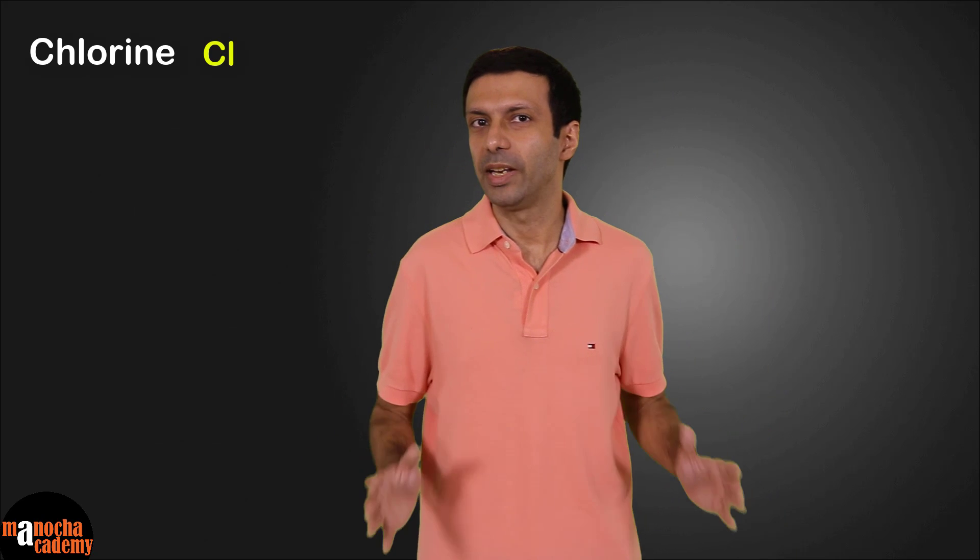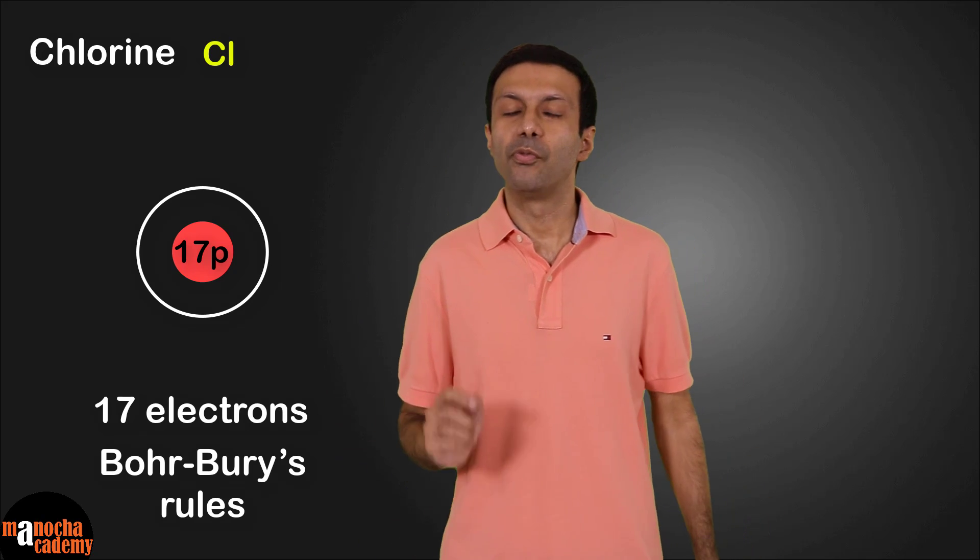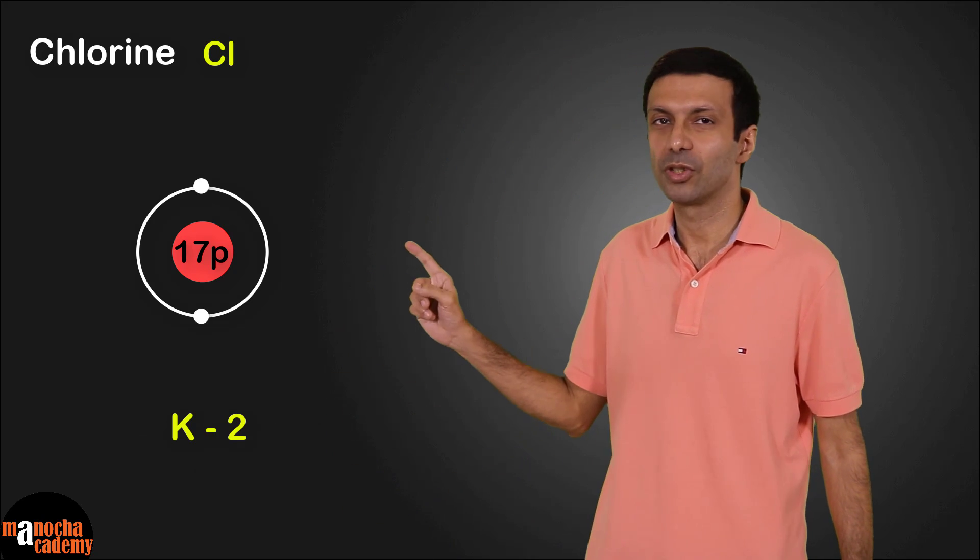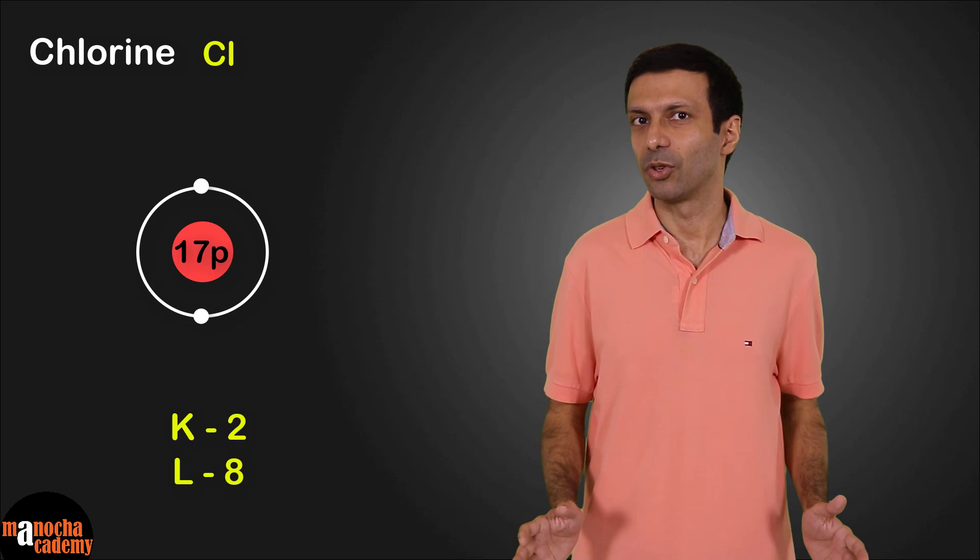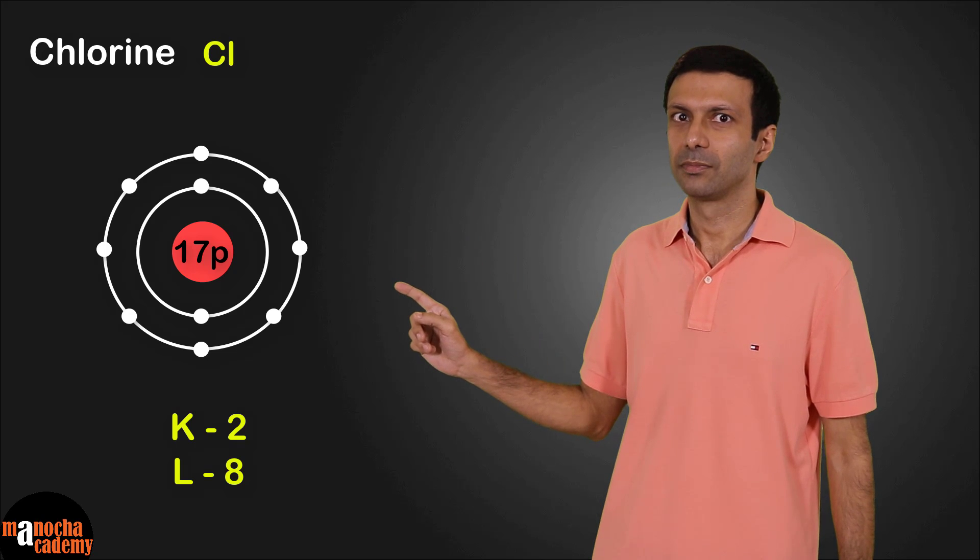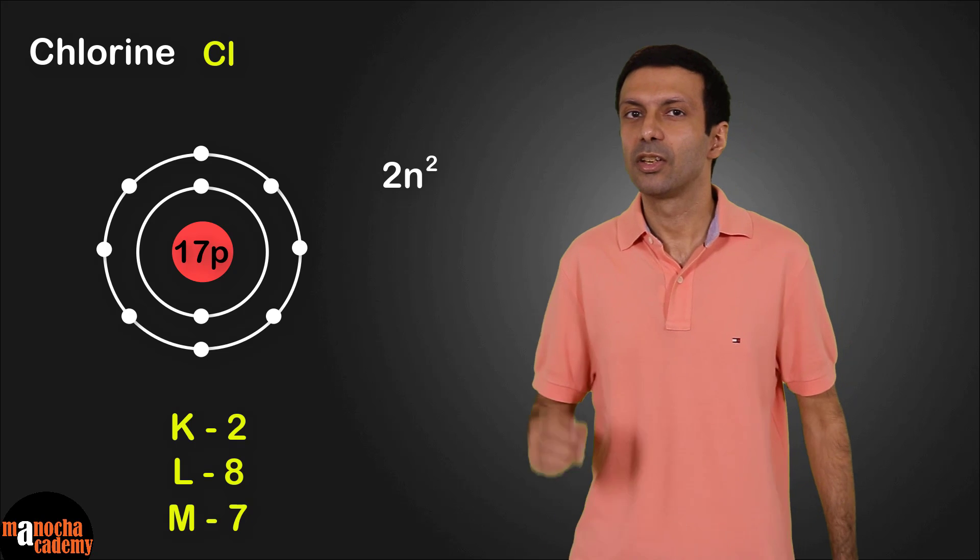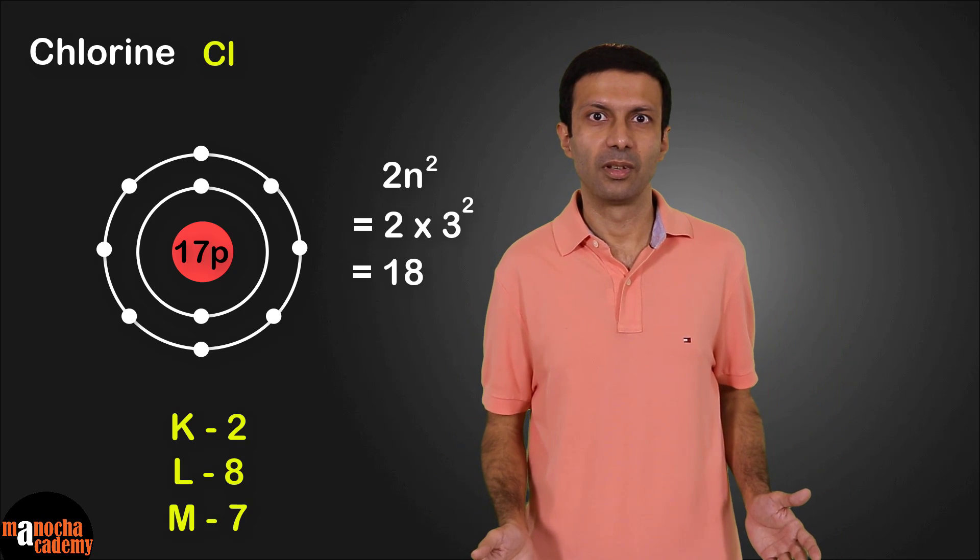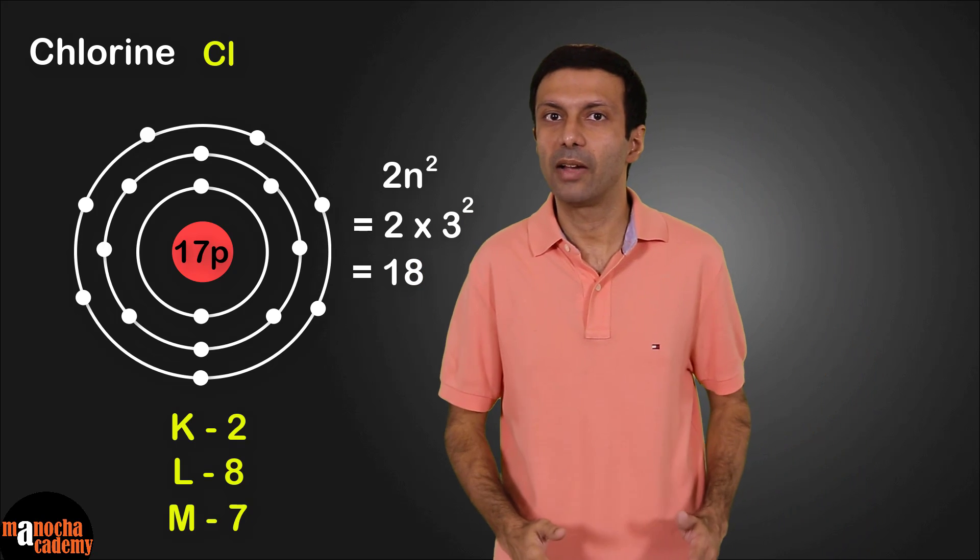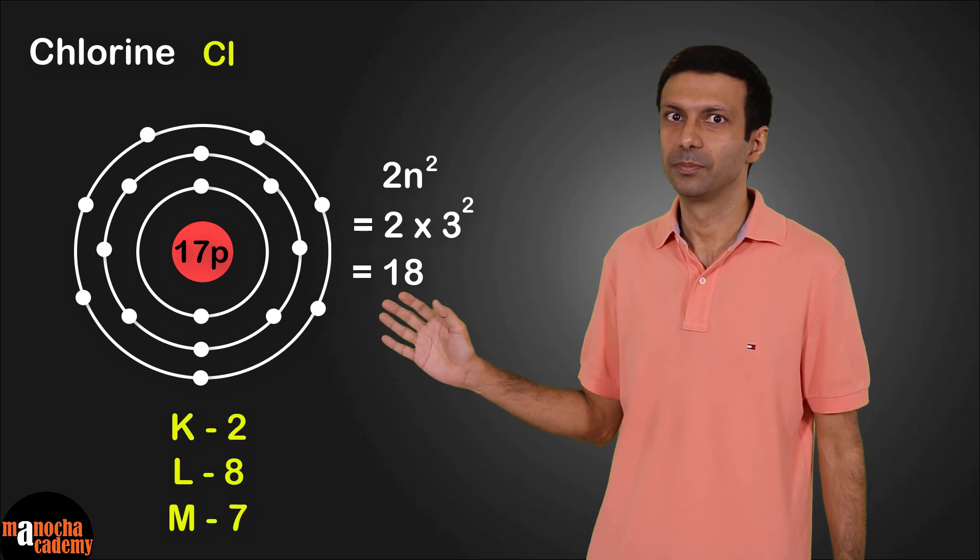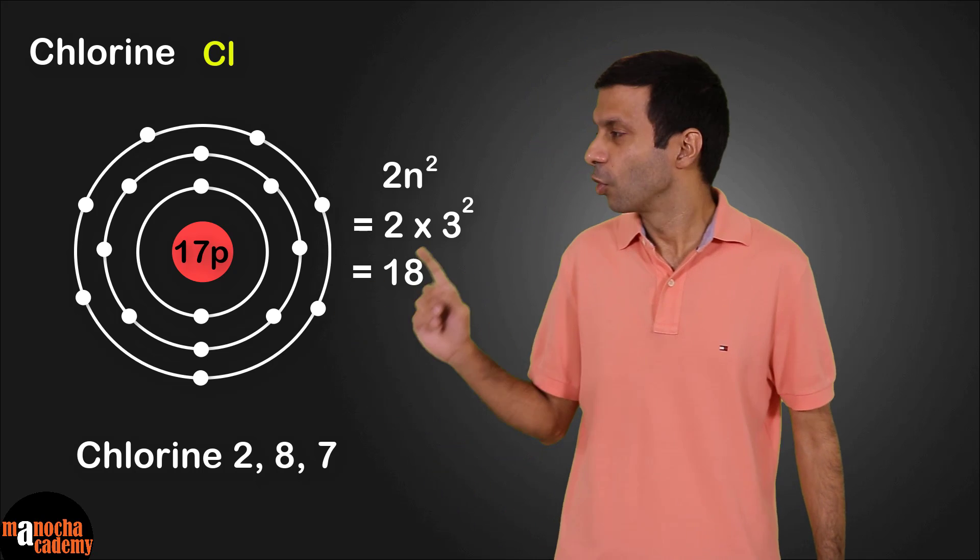Next, let's look at chlorine. The chlorine atom has 17 electrons. Again, we'll apply Bohr-Bury's rules. The first shell can hold a maximum of 2 electrons. So let's put in 2 electrons in the first shell. Now we are left with 15 electrons. The second shell can hold a maximum of 8 electrons. So let's fill in 8 electrons in the second shell. And we are now left with 7 electrons. The third shell can hold a maximum of 2N squared, so that's 2 into 3 squared, which is 18 electrons. So we can put in all the remaining 7 electrons in the third shell. The third shell is the outermost shell and it does not have more than 8 electrons, so Bohr-Bury's rules are being followed here. This is our electron configuration diagram of chlorine. And in short, we can write it as 2,8,7.